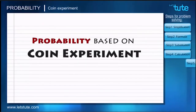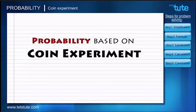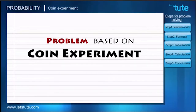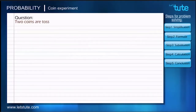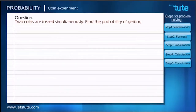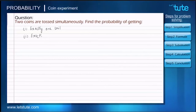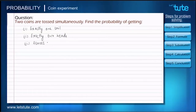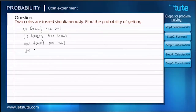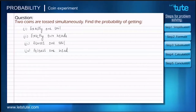In our previous session we learned to figure out probability based on a coin experiment. Today we'll solve a problem based on the same. Here's the problem: two coins are tossed simultaneously. Find the probability of getting: one, exactly one tail; two, exactly two heads; three, at most one tail; four, at least one head.